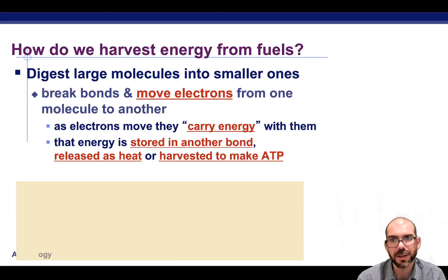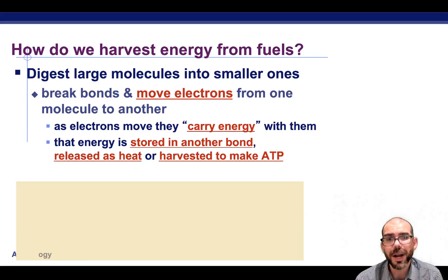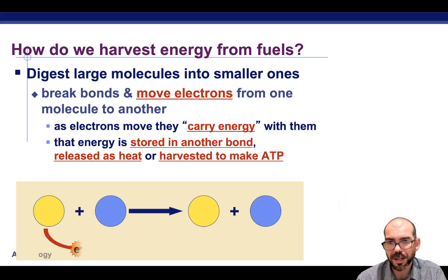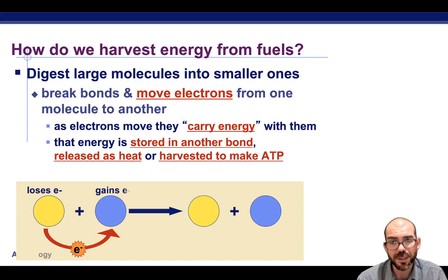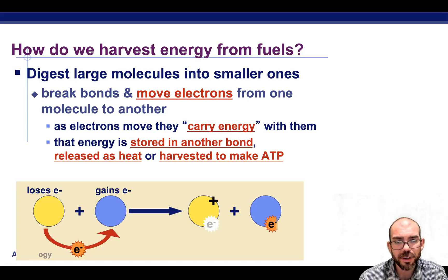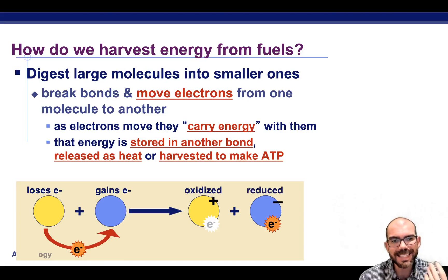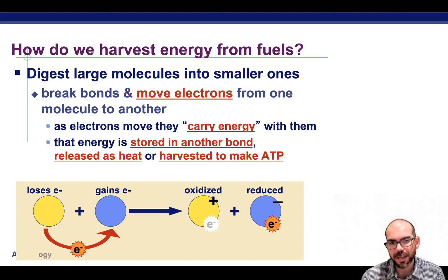So how are we going to do this harvesting? We're going to have to digest large molecules into small ones. We're going to have to break bonds and move electrons around. In some instances, an electron is going to have to be transferred or lost, and in other instances an electron is going to be gained. A reminder of your time in chemistry — when an atom loses an electron, that's referred to as an oxidation. When it gains an electron, that's referred to as a reduction.